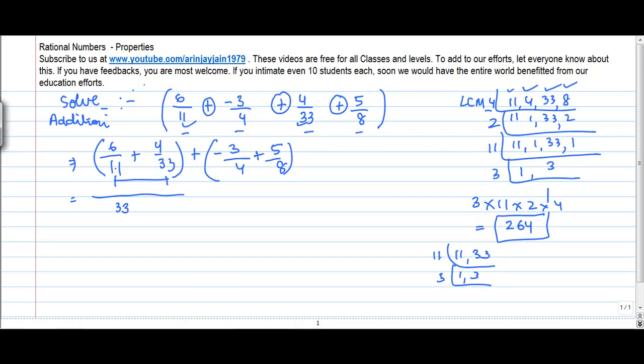33 goes into 11 three times. 3 multiplied by 6 gives me 18. Plus, 33 goes into 33 one time. 1 into 4 gives me 4. Plus, 4, 8, again the LCM is 8. 8 goes into 4 two times. 2 into minus 3 gives me minus 6. Plus, 8 goes into 8 one time, so 5.